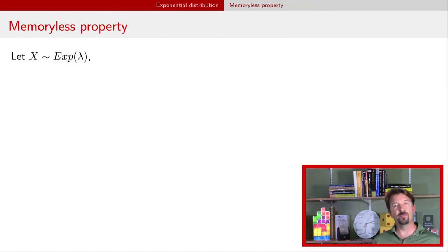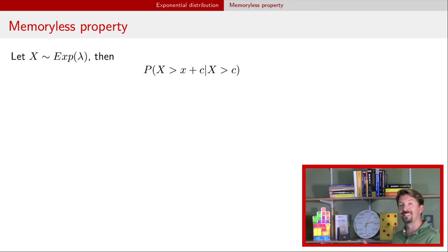All right, the exponential distribution has a very interesting property called the memoryless property. So imagine that you have an exponential random variable with rate parameter lambda, and I tell you that I know that that random variable is greater than some value c. And you're interested in determining what the probability of that random variable being greater than c plus some value here, we'll call it x. So you know that it's got to be bigger than c, and the question is, how much bigger? For instance, c might be 3. So I tell you the random variable is definitely greater than 3, and you want to now determine what the probability is that's greater than 3 plus x.